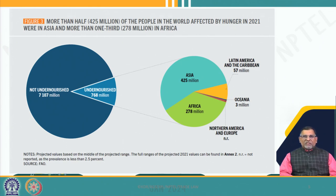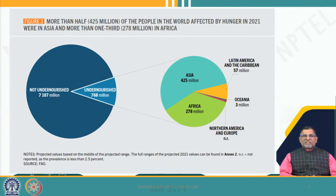Within these 768 million people, the largest share is 425 million in Asia alone. The data is both interesting and astonishing. Asia as a whole — including giants like India, China, and Japan — has the largest undernourished population in the world. The second is Africa with 278 million, third is Latin America and the Caribbean with 57 million, then Oceania around 3 million, and a very small quantity in northern America and Europe.